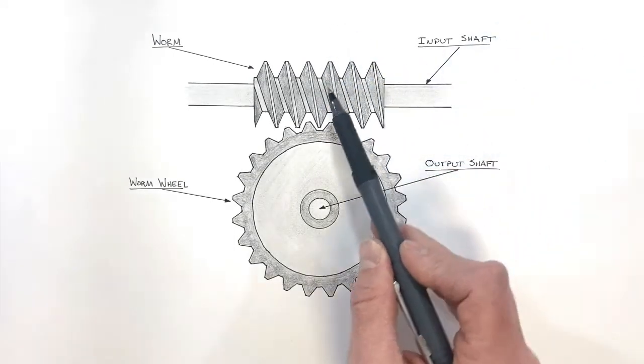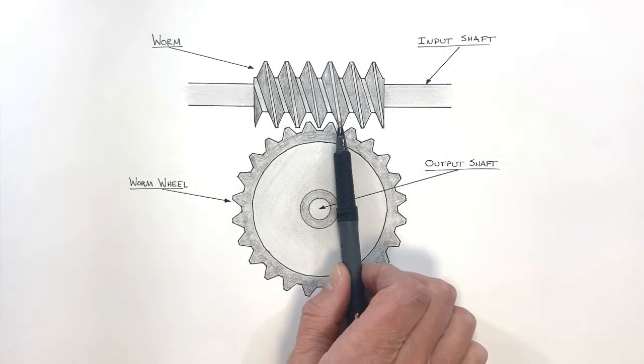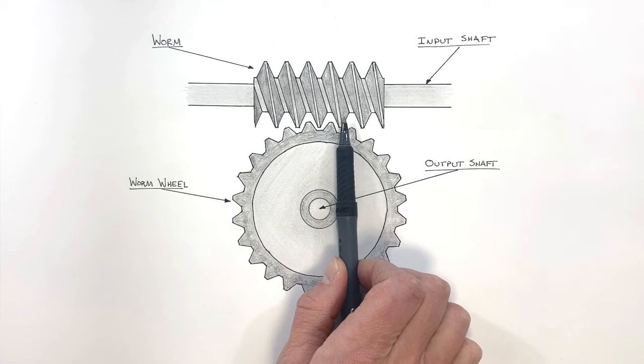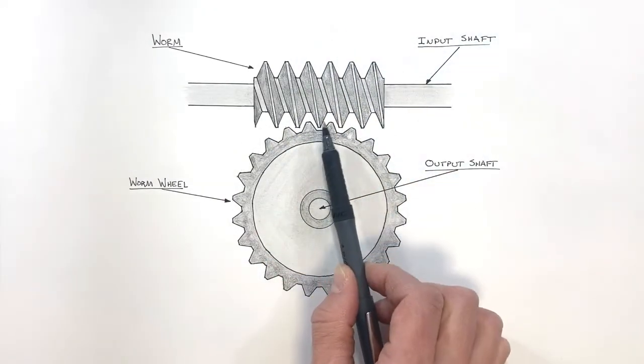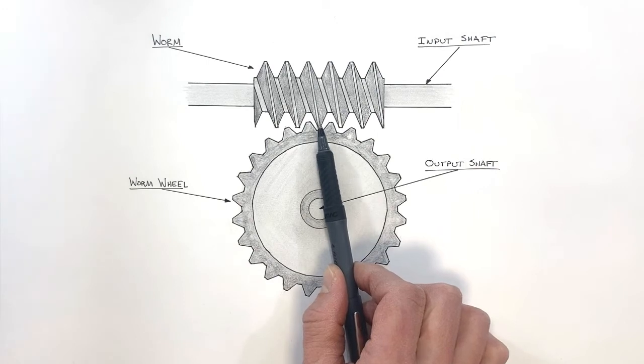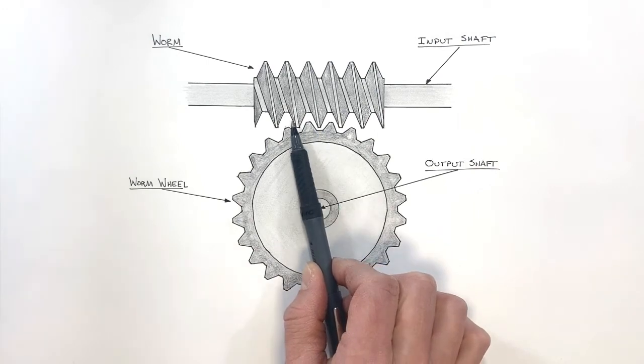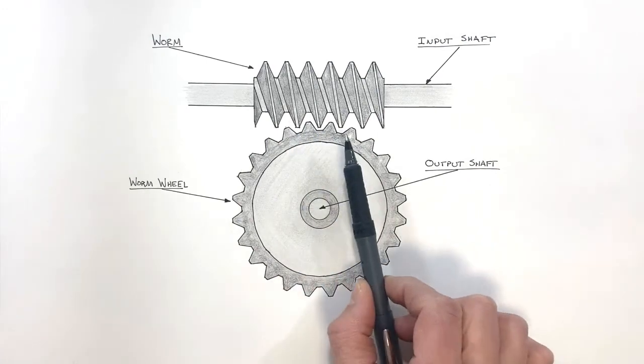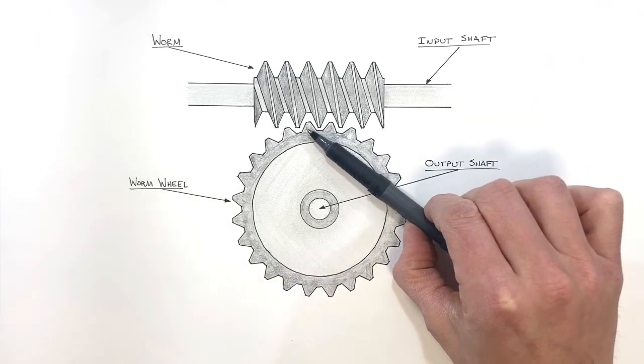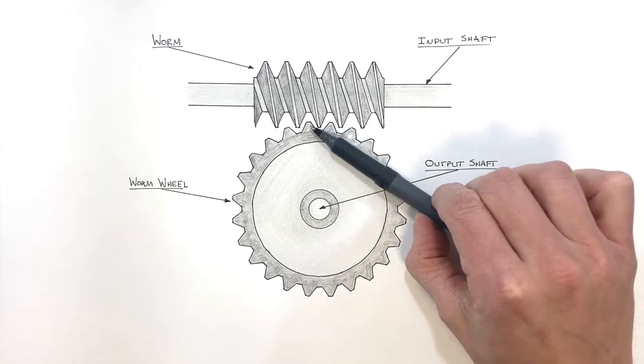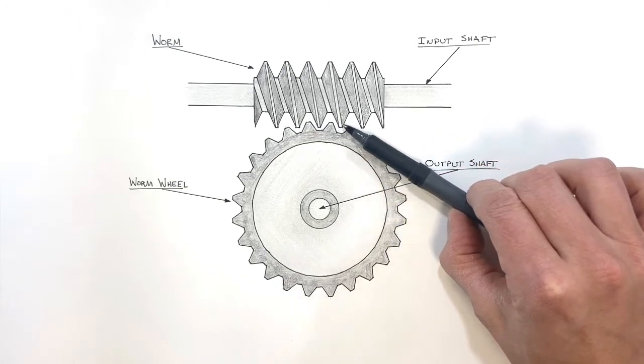...these teeth are all going to effectively move one pitch over. So if this rotates around once, this tooth is effectively going to move from here to here. That is in turn going to drag our worm wheel one tooth over as well, because these are meshed together right along a line of action right here.